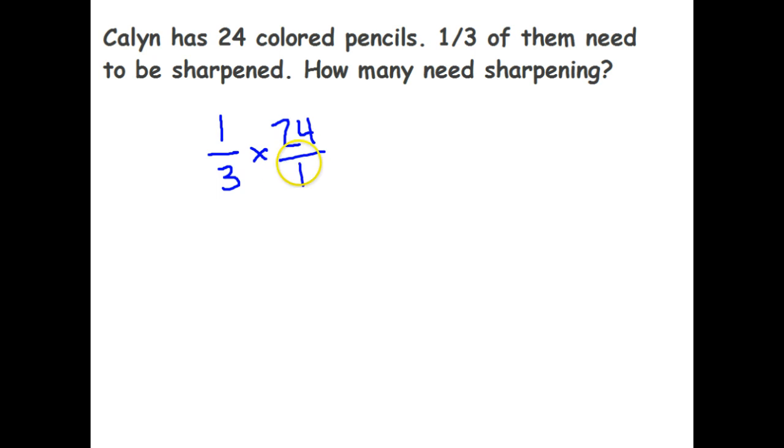24 times one is 24. Three times one is three. 24 divided by three is eight. Eight times three is 24, so I know that's right. She needs to sharpen eight pencils. She better get on that.